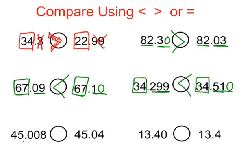Same whole number. One decimal is in the thousandths and one is in the hundredths. So I'm going to go ahead and add a zero here. Now I'm comparing 8 versus 40 thousandths. 40 thousandths is larger than 8 thousandths, so it would be pointing in that direction — it would be less than.